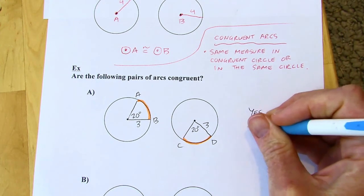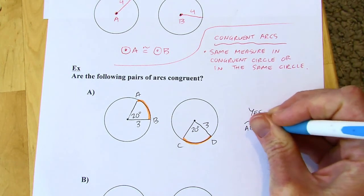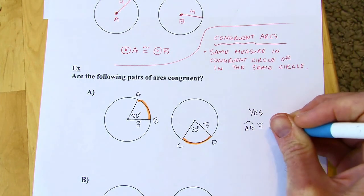And I can say, yeah, arc AB is congruent to arc CD.